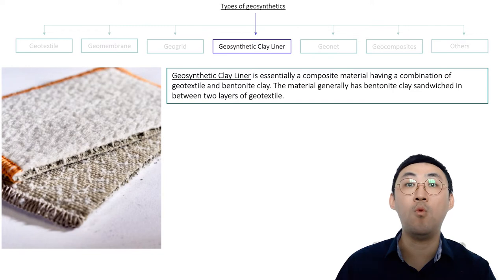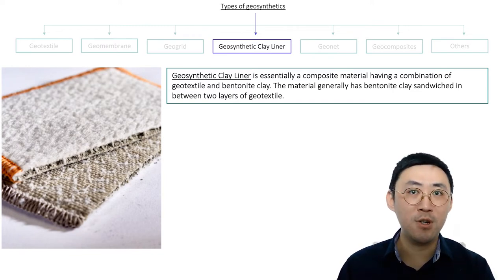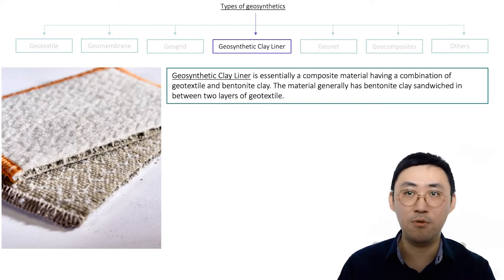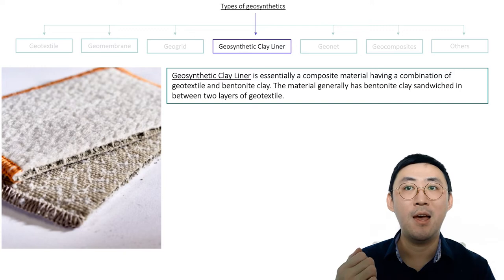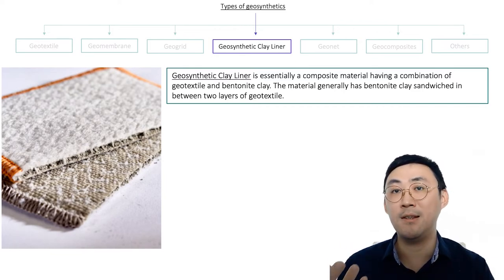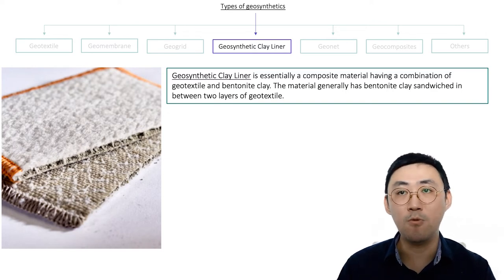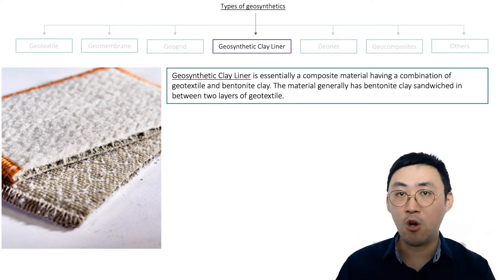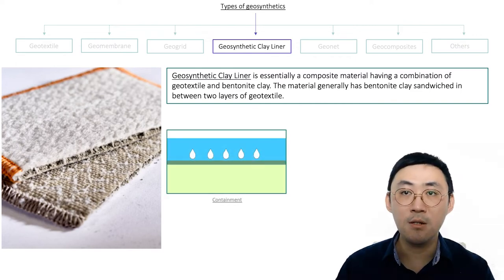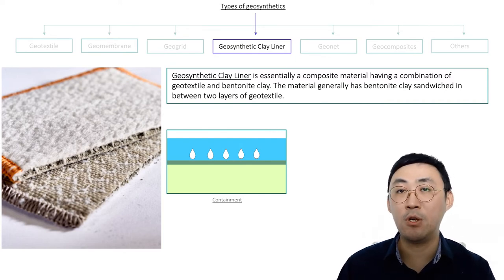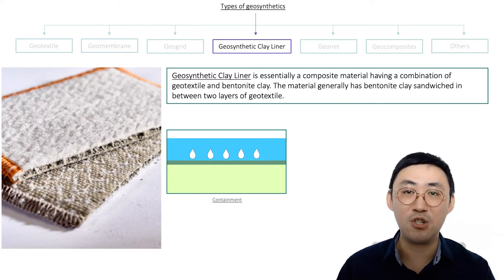The fourth type of geosynthetics is geosynthetic clay liner, which is essentially a composite material — a combination of man-made geotextiles and natural bentonite clay. Geosynthetic clay liner has bentonite clay sandwiched between two layers of geotextiles by either needle punching, stitching, or adhesion. It is commonly used to contain liquid for environmental or hydraulic applications such as landfills, reservoirs, water ponds, and mining applications — as long as it serves the function of containment.